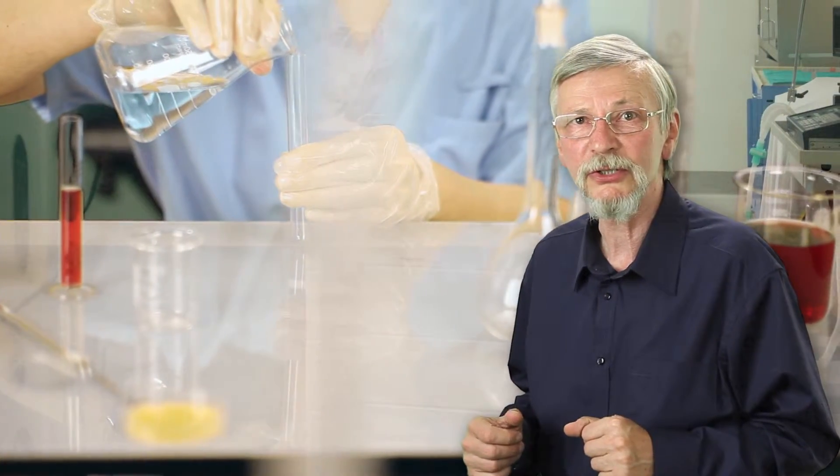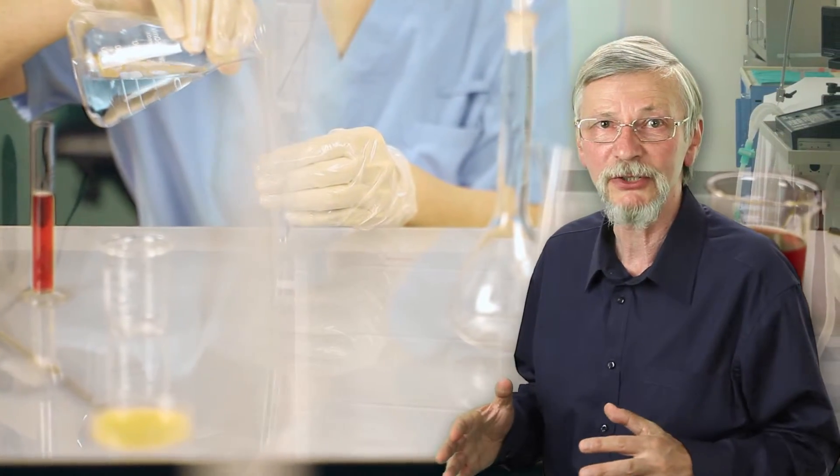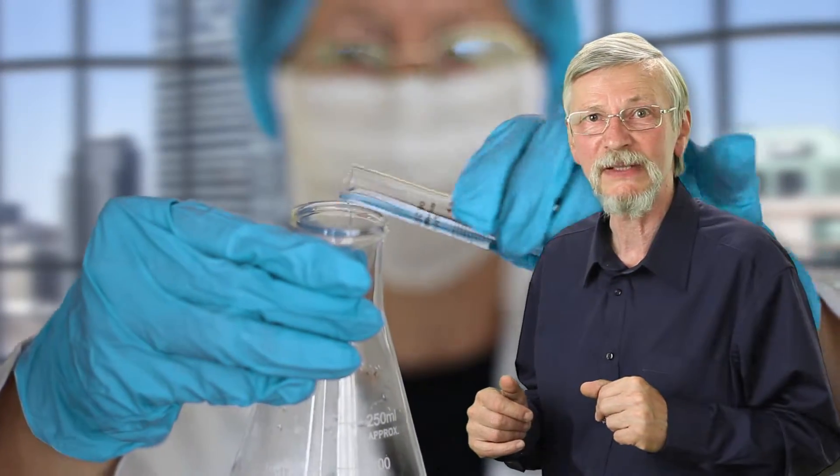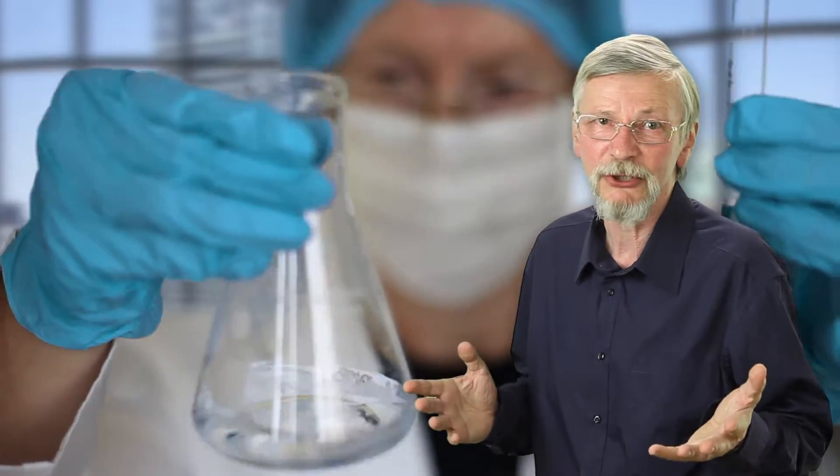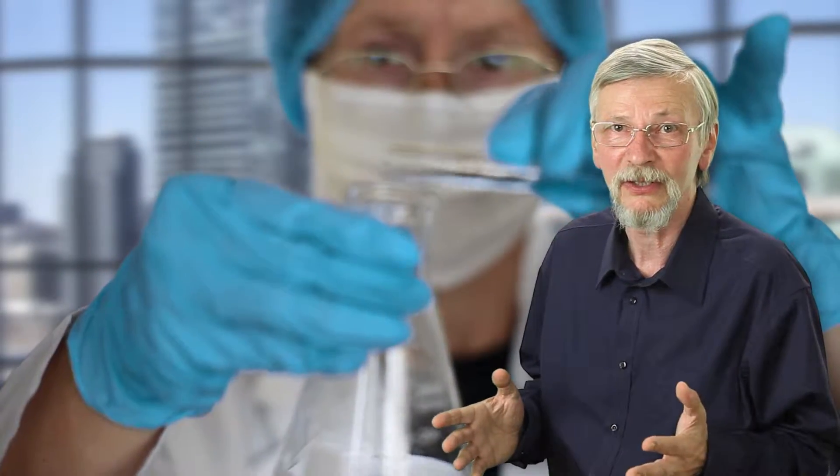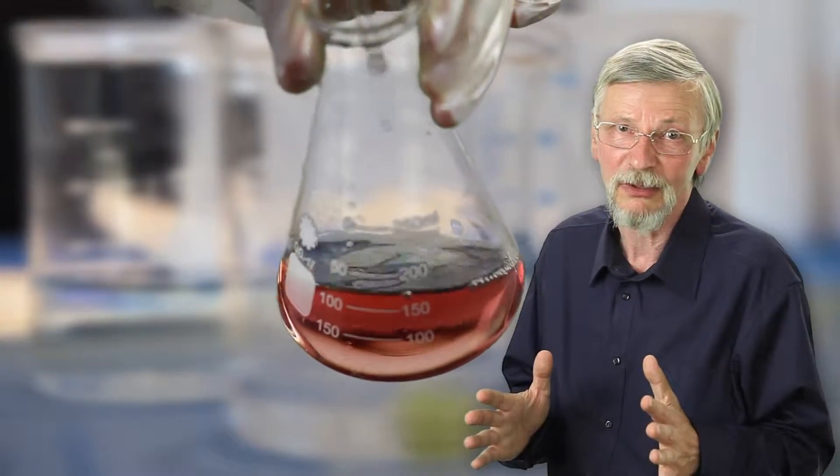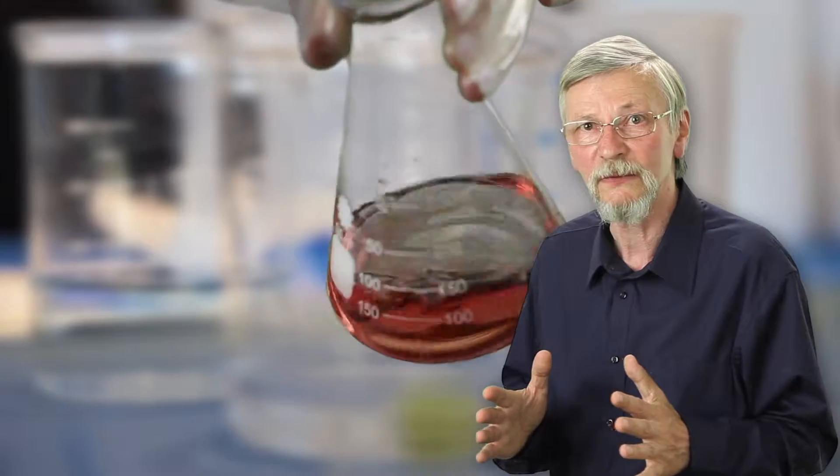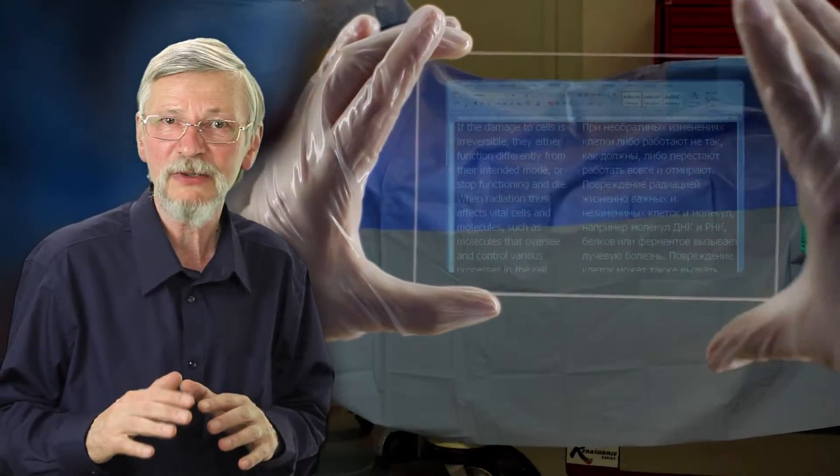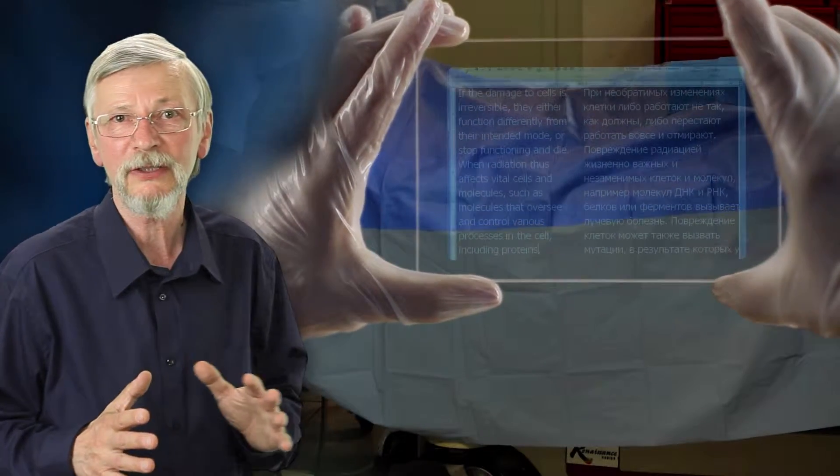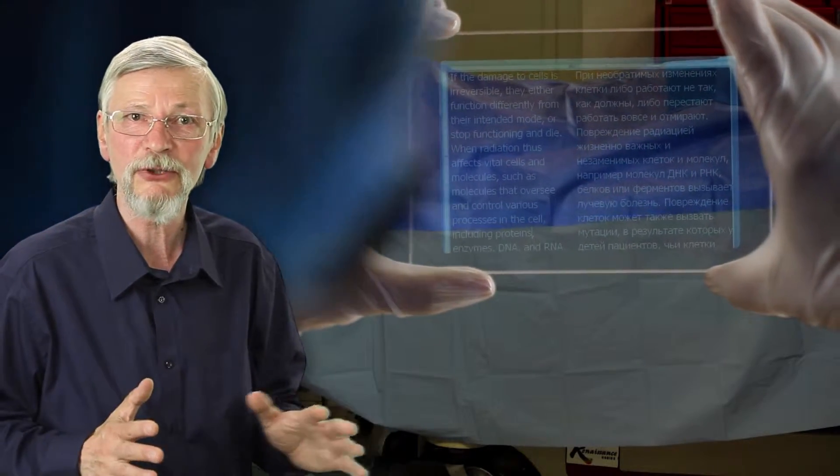When the cells and tissue are thus affected by radiation, there are several possible outcomes. In some cases, the damage does not disrupt the cell's functioning. In other situations, the damage occurs but can be repaired. This is a natural process in all living cells that occurs frequently, and if the radiation dose or the dose rate is small, repair is possible. Another possibility is irreversible damage. If the damage to cells is irreversible, they either function differently from their intended mode or stop functioning and die.